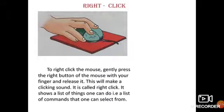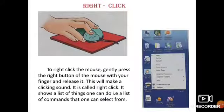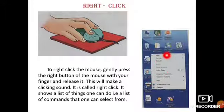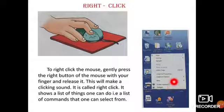Next we have right click, where we press the right button of the mouse. When we click and release the right button, a sound comes — this is called a right click. It shows a list of things you can do. A dialog box appears with options such as view, sort, refresh, paste, undo, copy, graphics, new, and so on. You can select any one of them to perform a task.